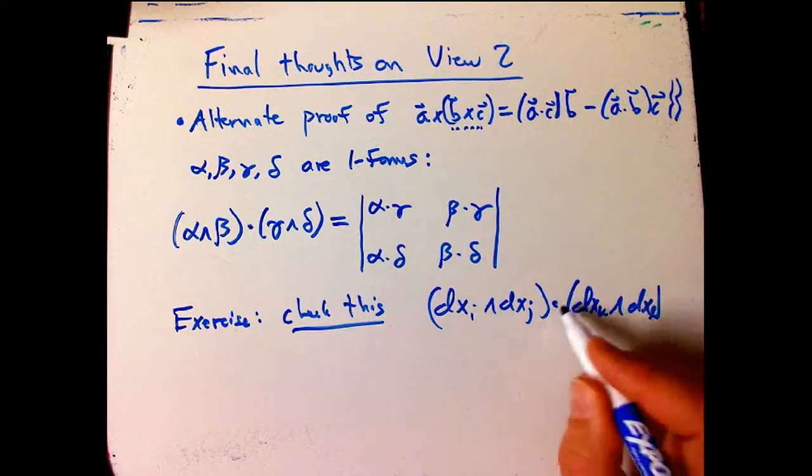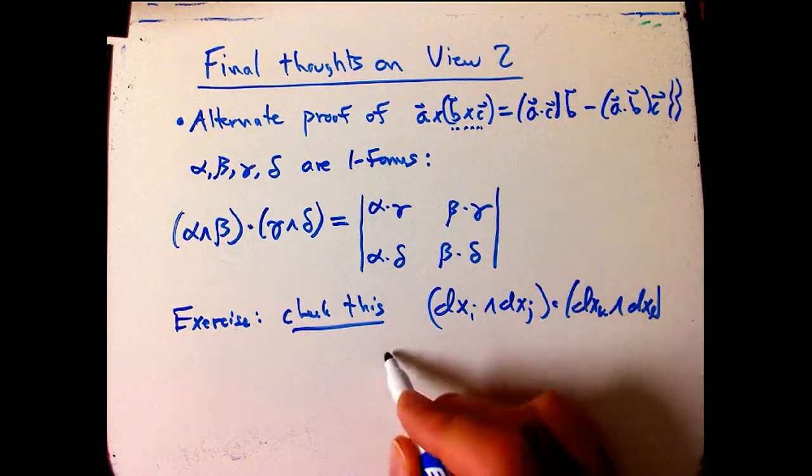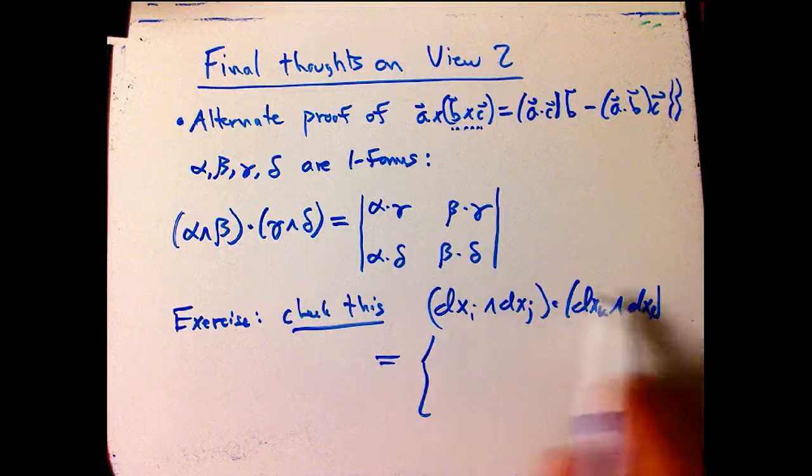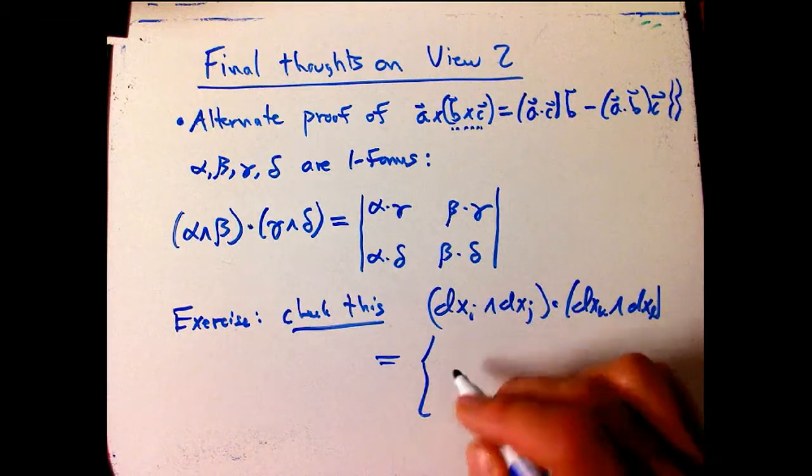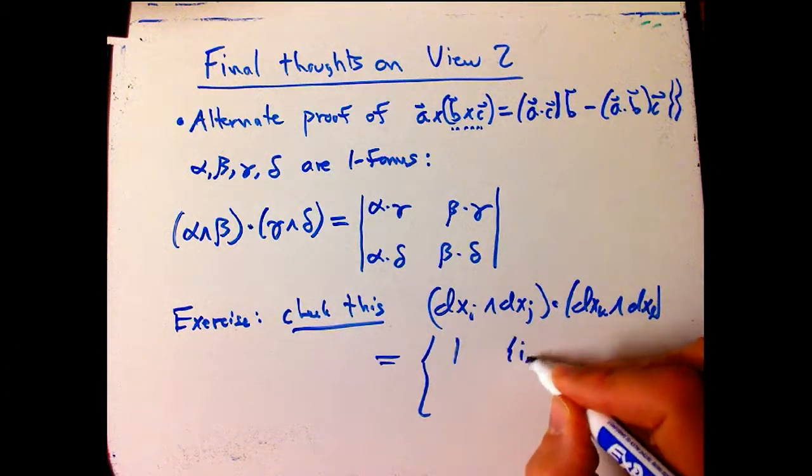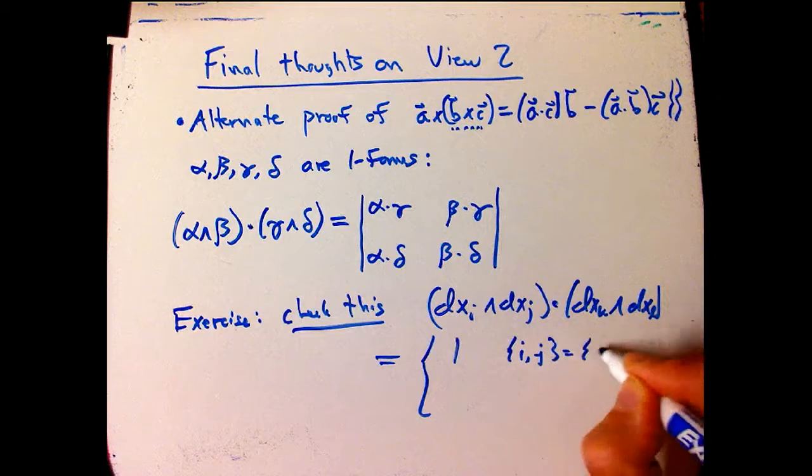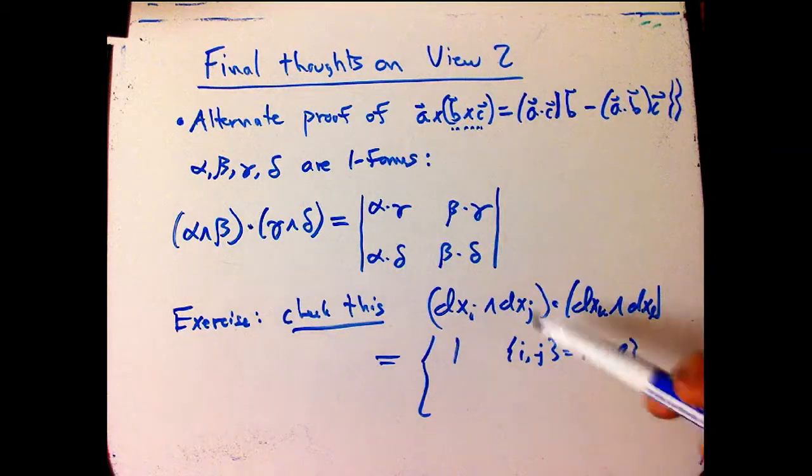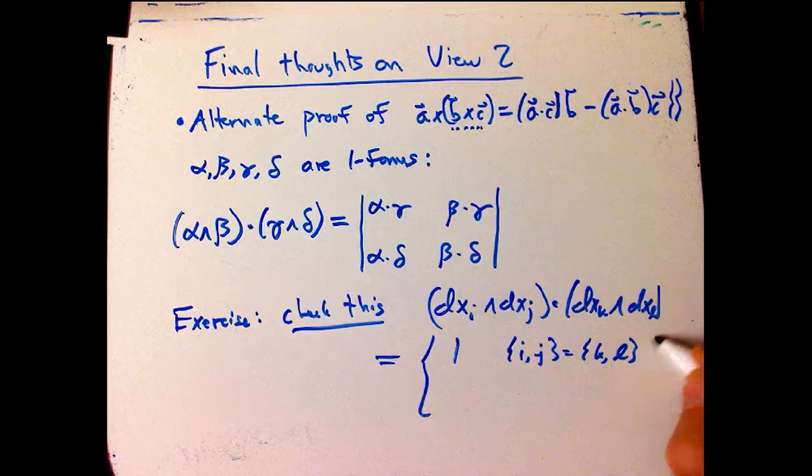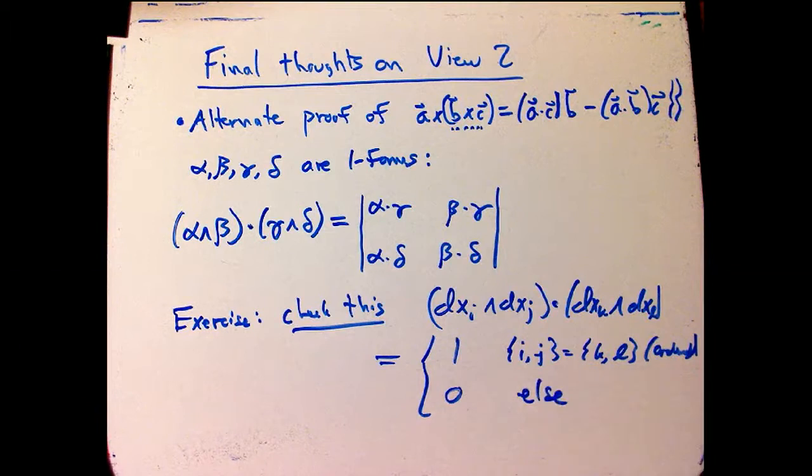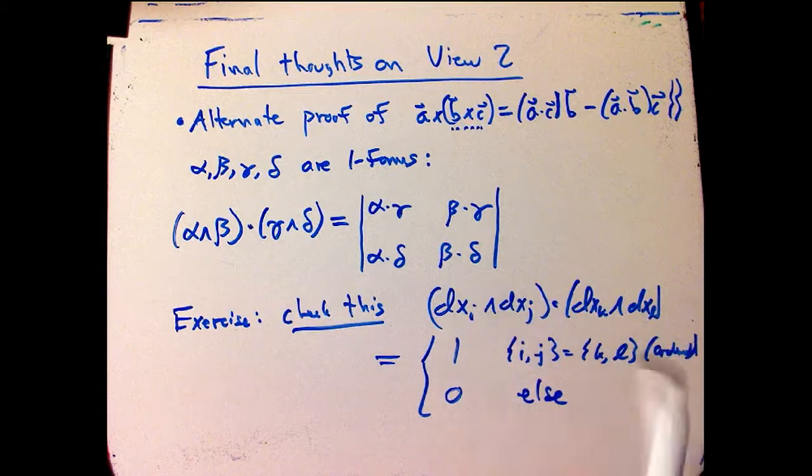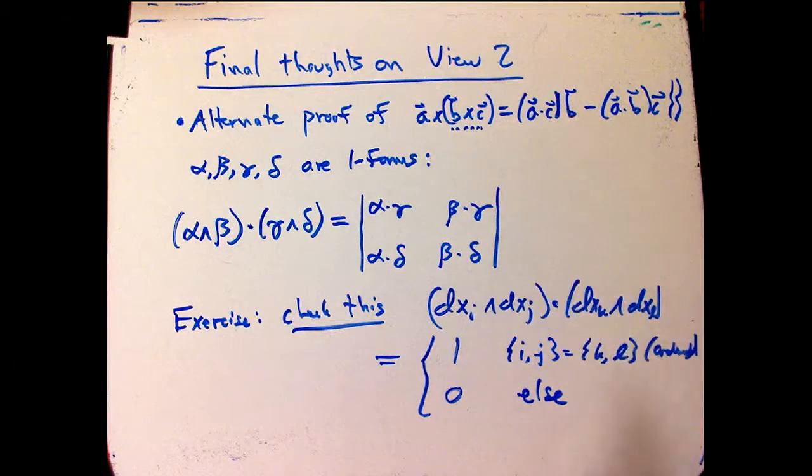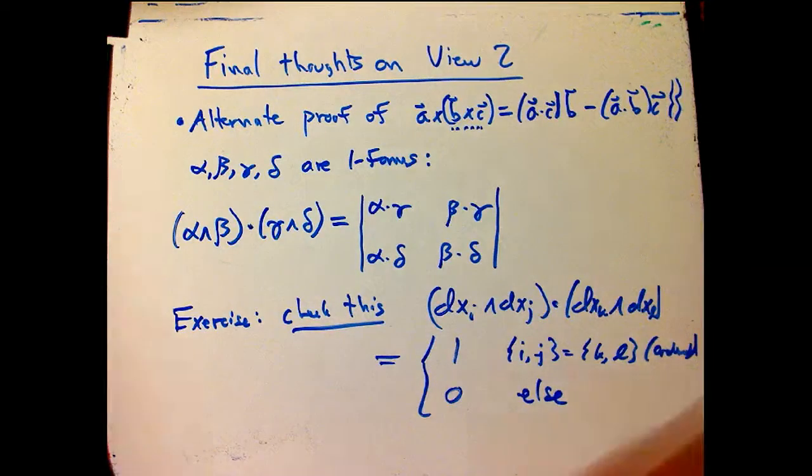And I'll just remind you, with the definition of the dot product on those basis forms, it's equal to, if this is coming from an orthonormal basis, if the X coordinates are orthonormal, then it's just going to be one if IJ is the same set as KL. And, of course, let's assume that they're in the same order as well. So really, as ordered sets, not just unordered. Because order always matters. And then zero, otherwise. We're just basically defining these guys to be orthonormal as well. So if you do that, it's not too difficult exercise to see that you get this kind of two by two determinant.